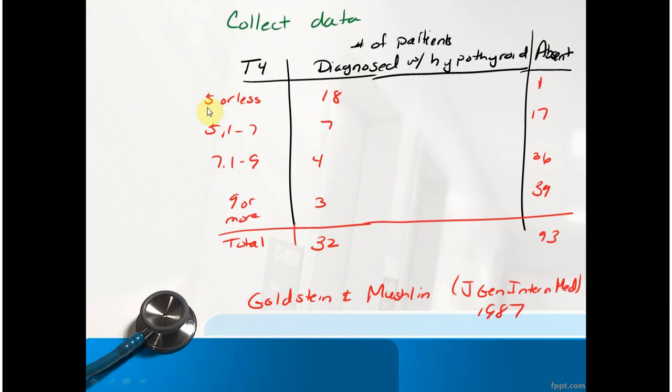Anybody with five or less of T4 would be diagnosed with having hypothyroidism, and anybody with above five would be diagnosed as being disease-free. That was the first thing we all came up with in class. The first and second sections said let's use five as the cut point.